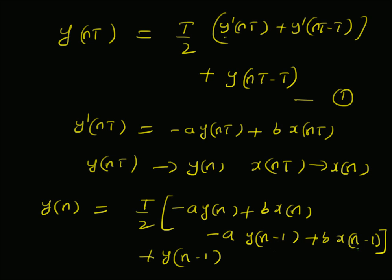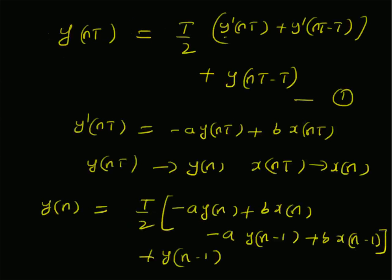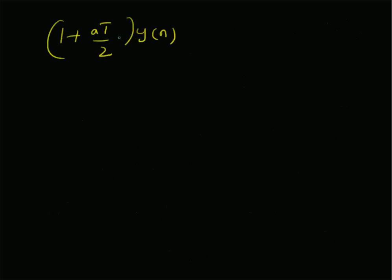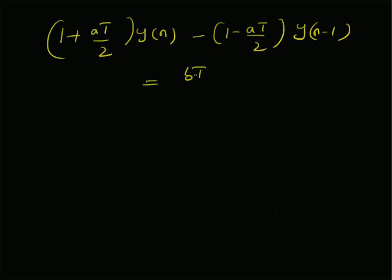Collecting all terms with y[n] and y[n−1] on the left side and x[n], x[n−1] on the right side, we get: (1 + aT/2)·y[n] − (1 − aT/2)·y[n−1] = (bT/2)·(x[n] + x[n−1]). This is the difference equation approximating the original differential equation.